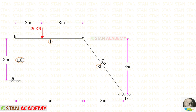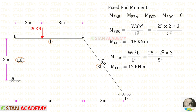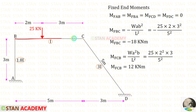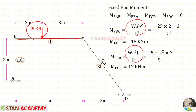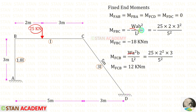We know that this frame is subjected to sway due to unsymmetrical dimensions. Let us assume that the sway occurs towards the left side. Now let us find the fixed end moments. In AB and CD there is no load, so all fixed end moments will be 0. In member BC, there is an eccentric point load of 25 kilo Newton. The formulas give: fixed end moment of BC = minus W·A·B²/L² and fixed end moment of CB = plus W·A²·B/L². Here W=25, A=2, B=3, L=5. For M_BC we get minus 18 and for M_CB we get positive 12.